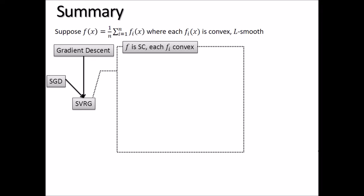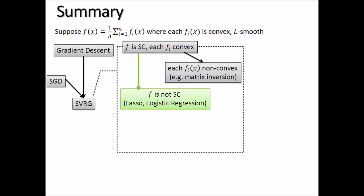The original SVRG method requires the function to be strongly convex and each fi to be convex. In the first result, we relax the first assumption and focus on functions that are still convex but not strongly convex. This includes many important examples like Lasso and logistic regression.